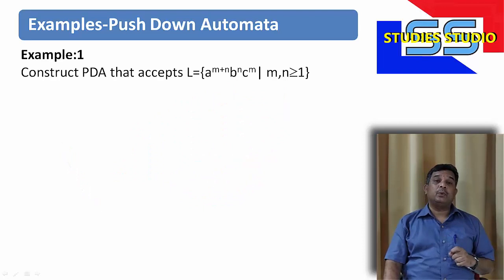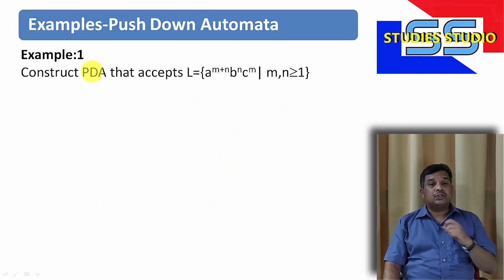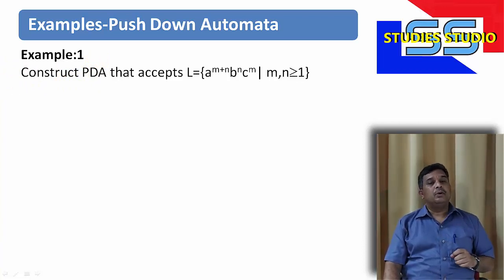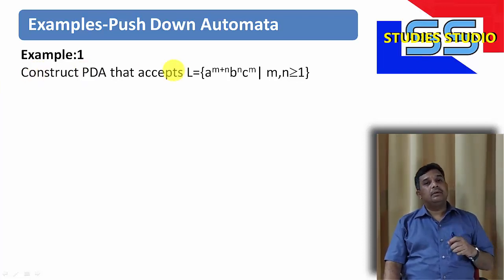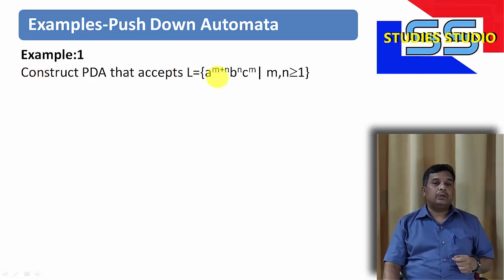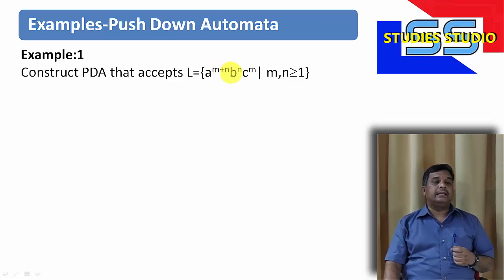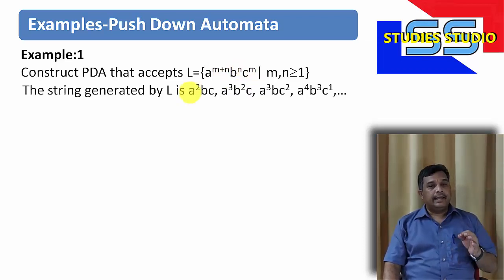The first example we are going to discuss today is: construct a PDA that accepts the language a to the power m+n, b to the power n, c to the power m, where m and n are both greater than or equal to 1. The strings generated by this language include a-squared b c, a-cubed b-squared c.